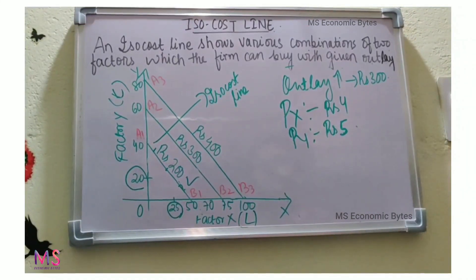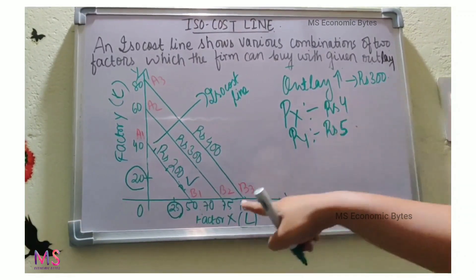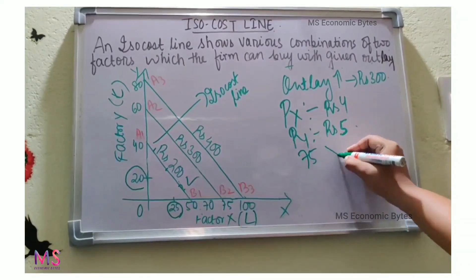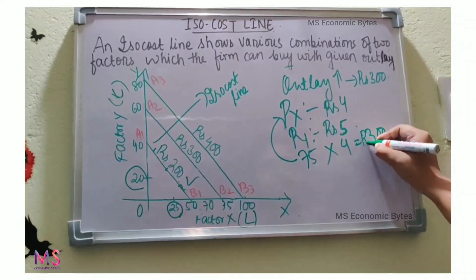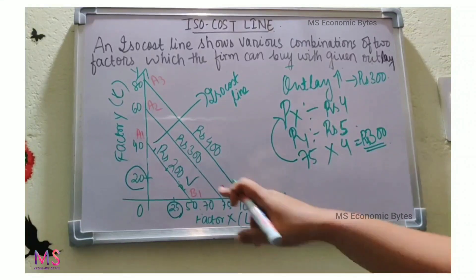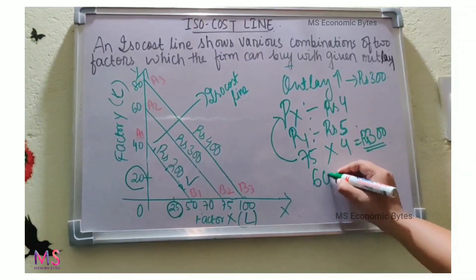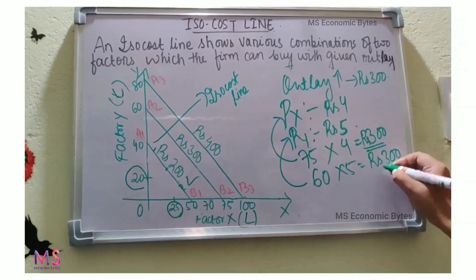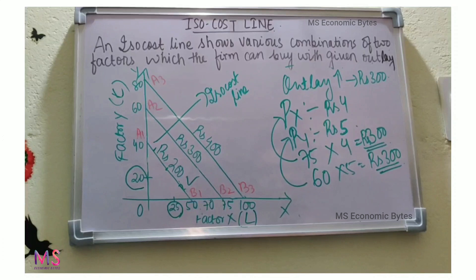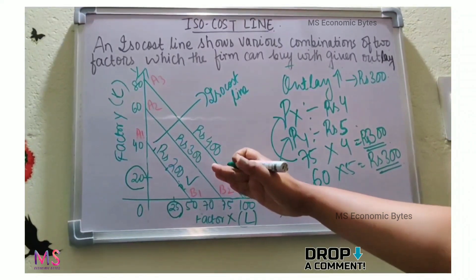Since the outlay has increased to ₹300, if the firm buys only X it can buy 75 units because 75 × 4 = ₹300, and if it buys only Y it can buy 60 units because 60 × 5 = ₹300. So the firm can move to a higher isocost line if it increases its total outlay.